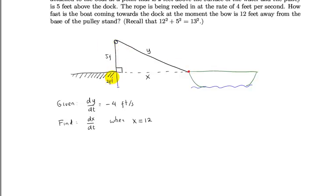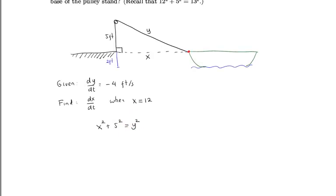Notice that here we have a right triangle. By the Pythagorean theorem: x squared plus five squared equals y squared. Using implicit differentiation with respect to t, since x and y both depend on t, we get: 2x times dx/dt equals 2y times dy/dt.